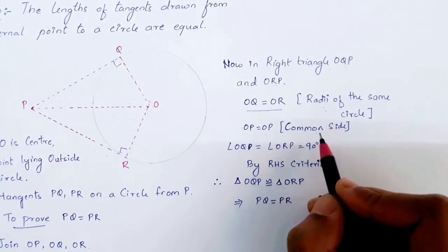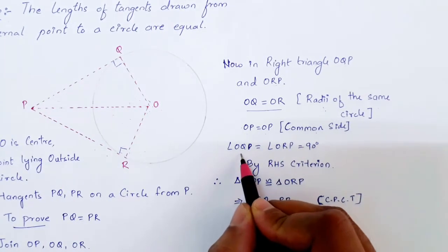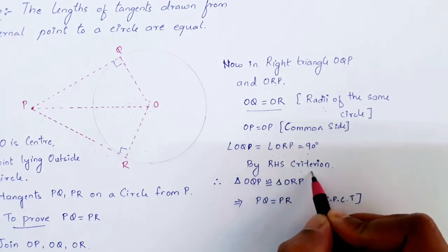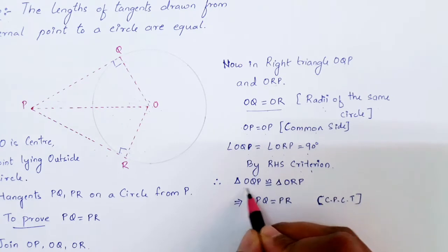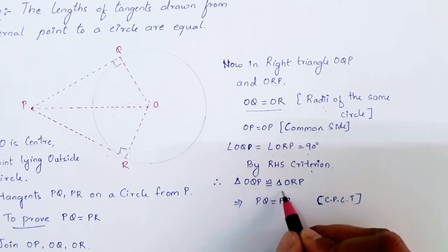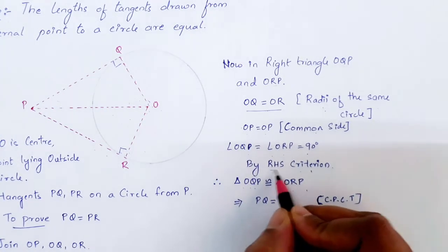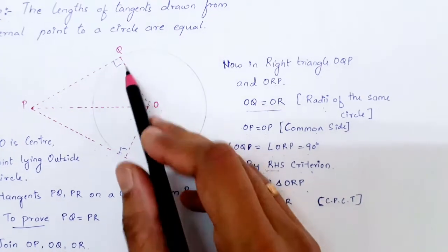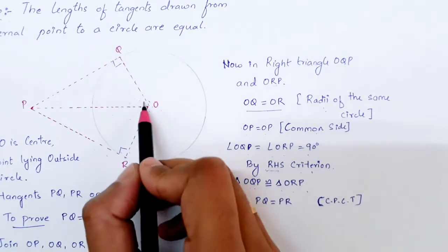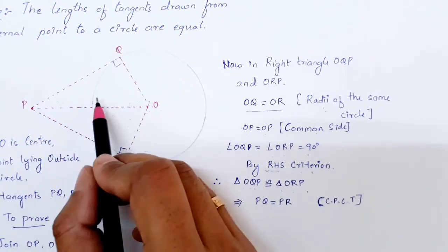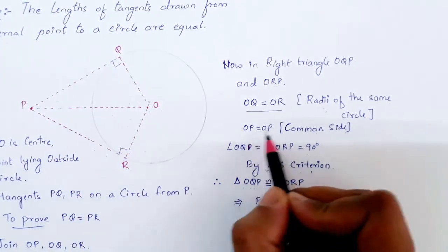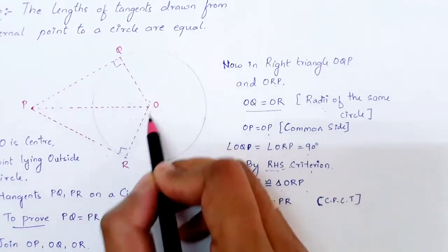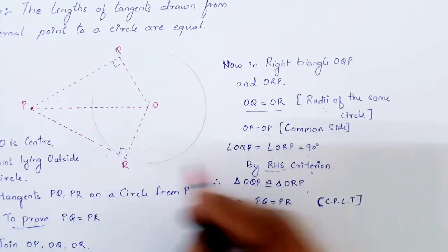We have already shown that angle OQP and ORP are 90 degrees. So by RHS criterion, we can say that triangle OQP is congruent to triangle ORP. Why RHS criteria? We have shown that in both triangles, angle Q and angle R are right angles, the hypotenuse OP is the same in both triangles, and the side OQ and OR is also the same.